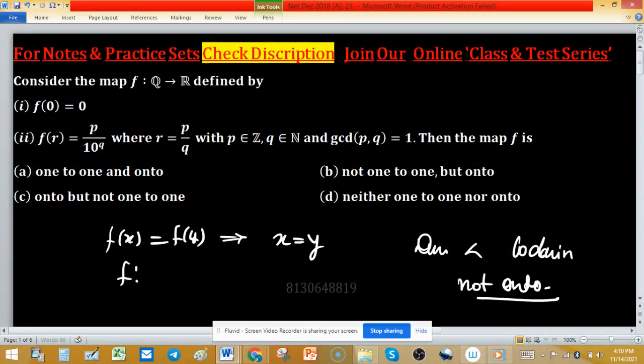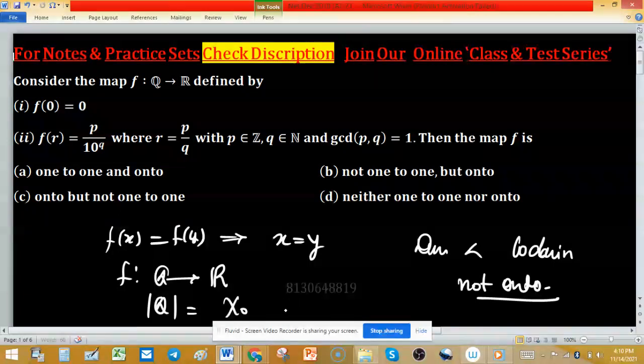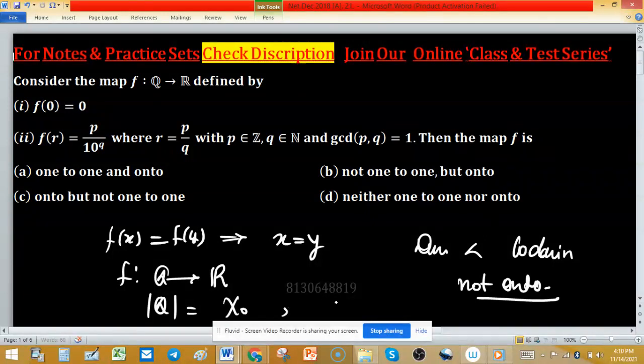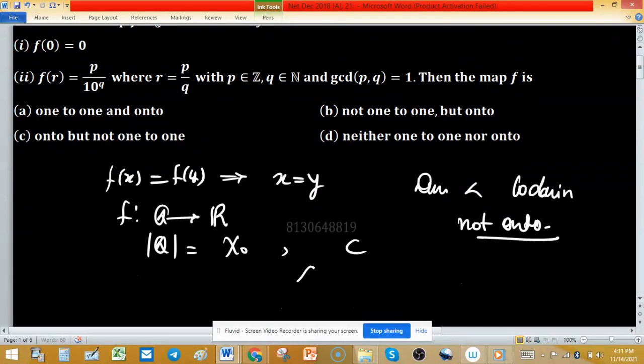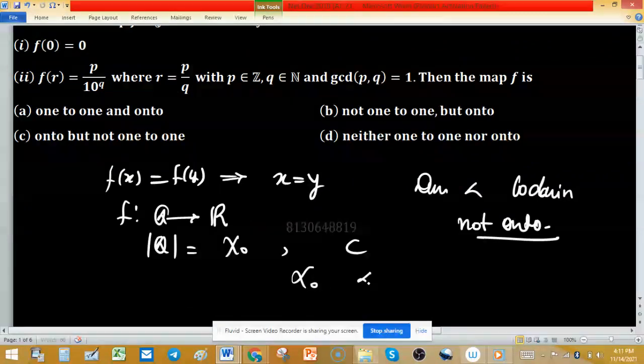As function is defined from set of rationals to set of reals, and cardinality of Q is same as cardinality of set of natural numbers, and cardinality of set of natural numbers is aleph naught, and cardinality of real numbers is uncountable, means c.